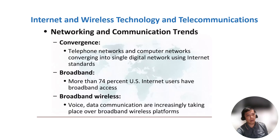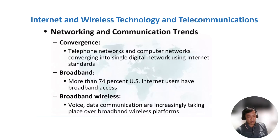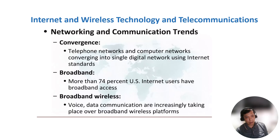In internet and wireless technology and telecommunication, networking and communication trends — convergence: telephone networks and computer networks are converging into a single digital network using internet standards. Convergence means one network provider delivers networking services for voice, data, and video in a single network offering instead of a separate network for each type of service. Broadband is high-speed internet access which provides higher speeds of data transmission; in the US, more than 74% of internet users have broadband access. Broadband wireless — voice and data communications are increasingly taking place over broadband wireless platforms, providing high-speed internet and data services through wireless local area networks and wireless wide area networks.